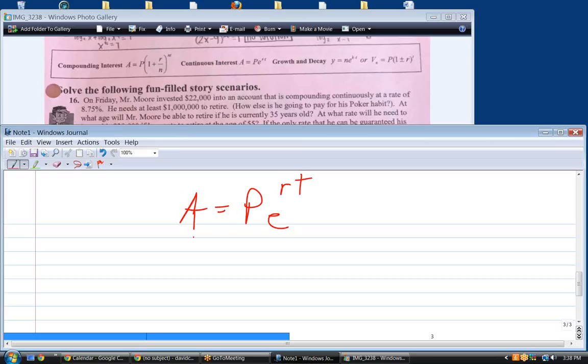Okay. So, with this problem, let's just start filling in steps. If you invested $22,000 at a rate of 8.75%, we're going to have 22,000 for starting principle, times the number E raised to the point - always convert these to decimals - times T.